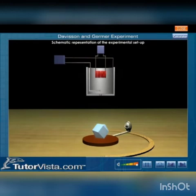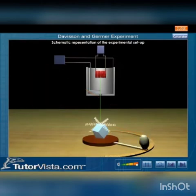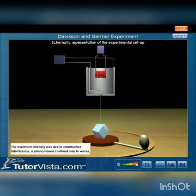The electron beam was made to pass through a pinhole and strike the crystal normally. The electrons scattered in all directions, acting like waves. They observed that at certain angles, the detector indicated a peak in the intensity of the scattered electron beam. This maximum intensity was due to constructive interference, a phenomenon confined only to waves. Thus they experimentally proved the wave nature of electrons.